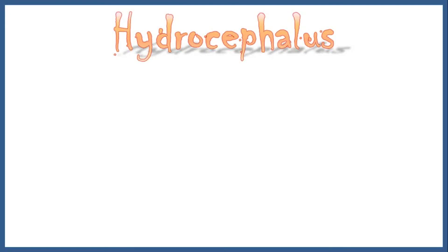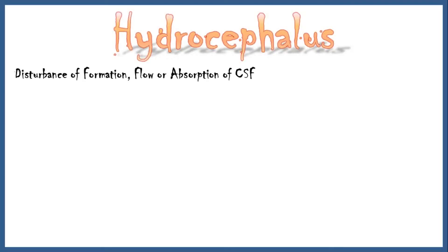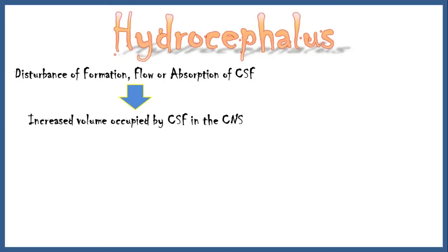Hydrocephalus can be defined broadly as a disturbance of formation, flow, or absorption of the cerebrospinal fluid, which leads to an increase in volume occupied by this fluid inside the central nervous system. Before we begin our discussion on hydrocephalus itself, we may recall our knowledge on the anatomy of the ventricular system and the flow of CSF.